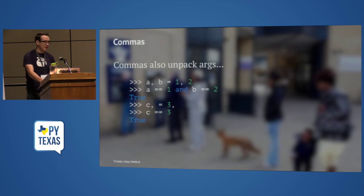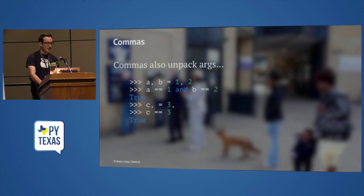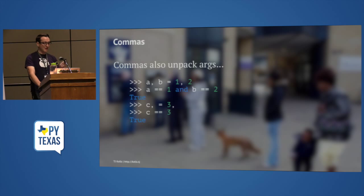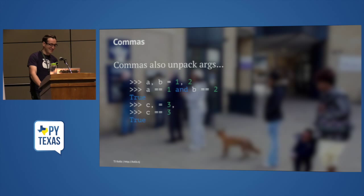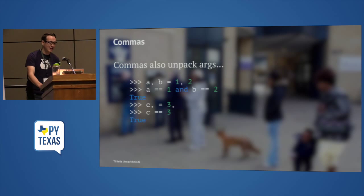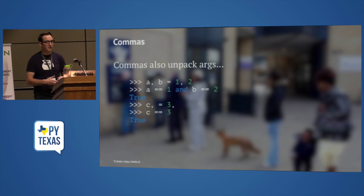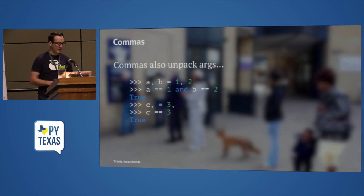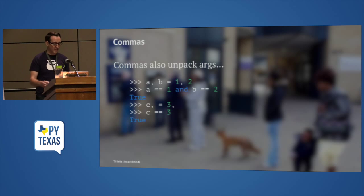So if I want to do multi-assignment, I can do a, b equals 1, 2, and I get a equals 1 and b equals 2. I can also do c equals 3 with a trailing comma — I don't know why you would do that, please don't, but it works, and it suggests something more about how the unpacking works.